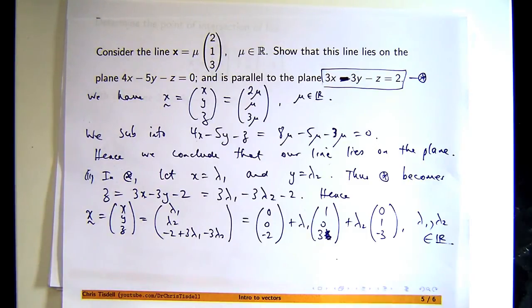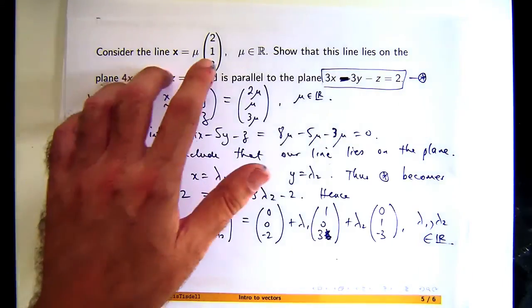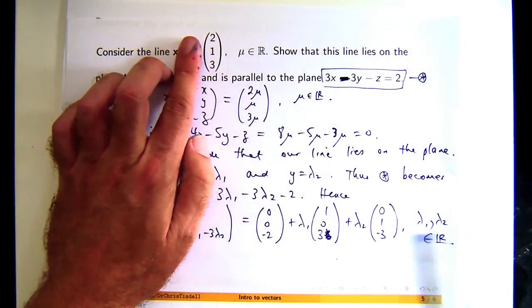So this is the real critical point in this step. Can I describe this vector, forget about the mu, through a linear combination of these two vectors?